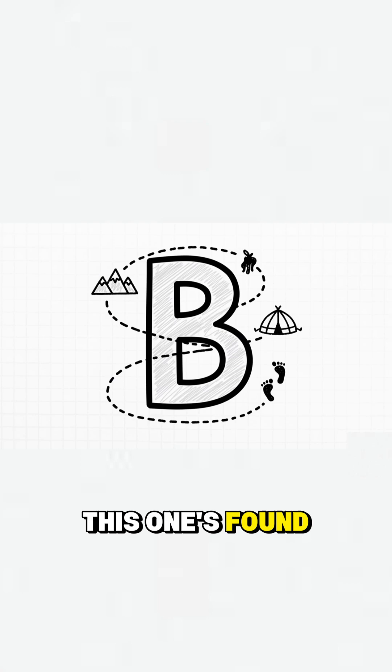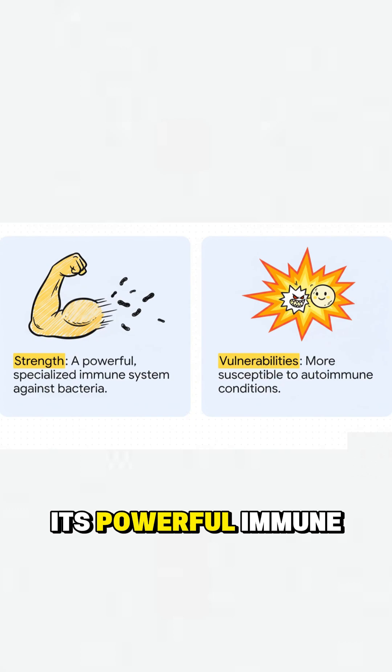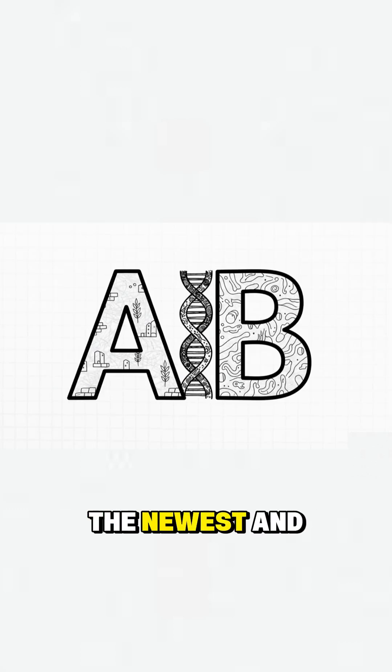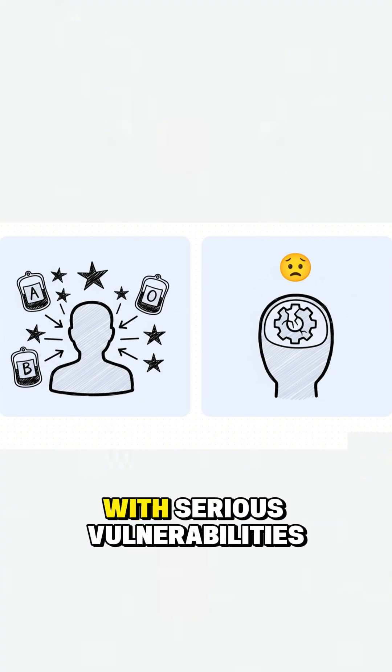This one's found in nomadic groups, and it tells a story of constant movement. Its powerful immune system is a double-edged sword in our modern world. The newest and rarest type, it's a true biological mashup. Their superpower, they can receive any blood, but it comes with serious vulnerabilities.